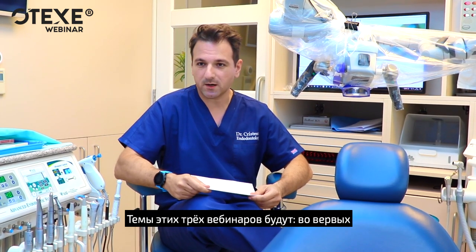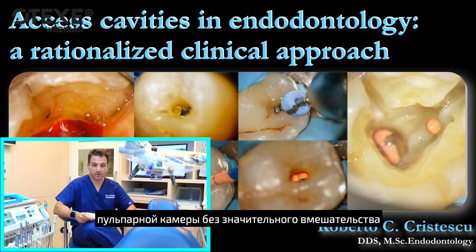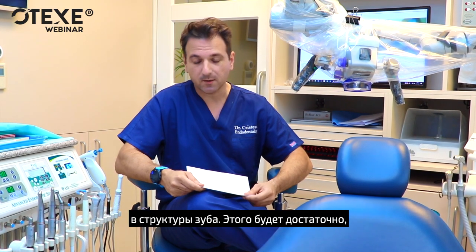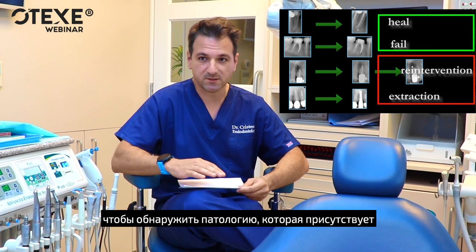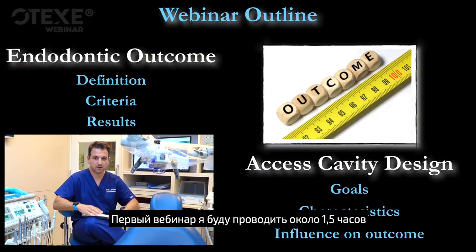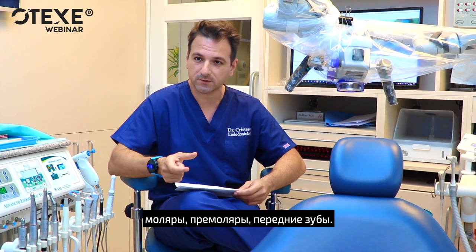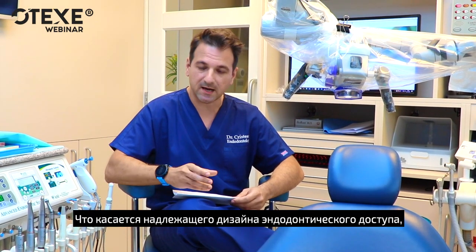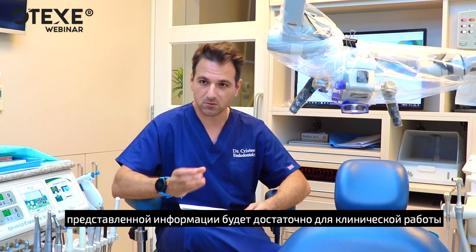The topics of those three webinars will be: first, access cavities — how to properly design an access cavity without destroying too much tooth structure, but still being efficient enough to find the pathology present in the coronal part of the tooth and the main canals. In the first webinar, which will take about one and a half hours, I will show, for all groups of teeth — molars, premolars and frontal teeth — how to properly design an access cavity that will be efficient in your clinical work.